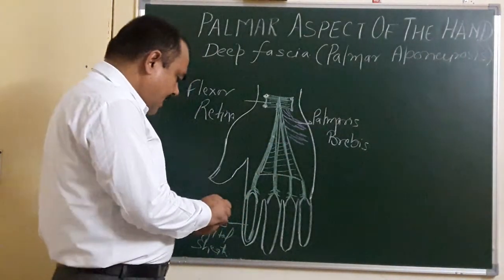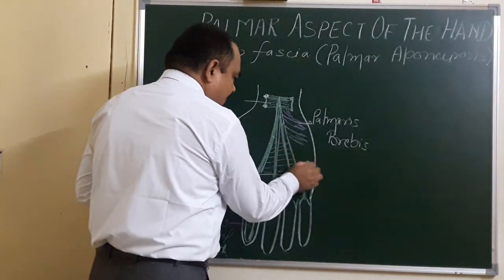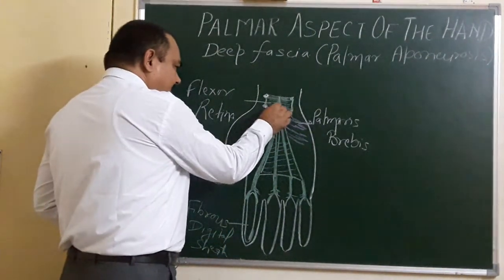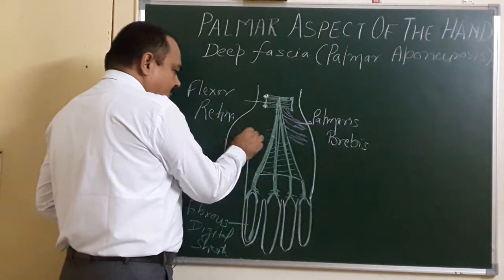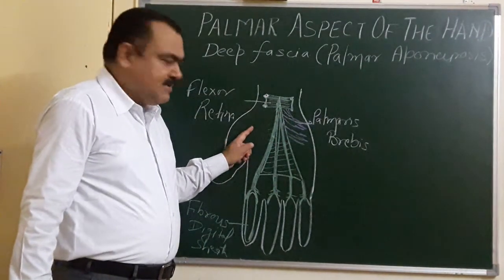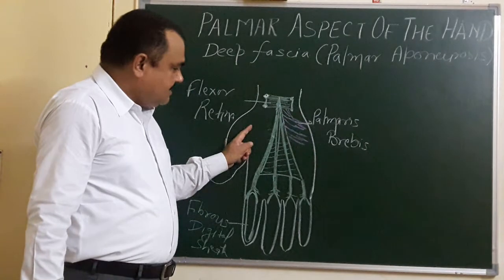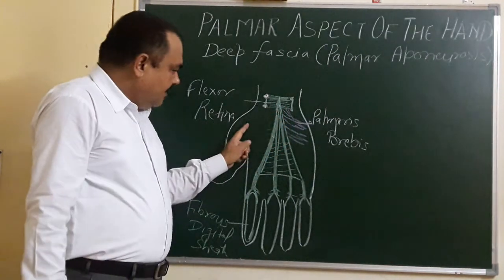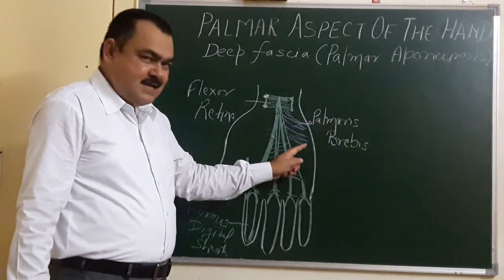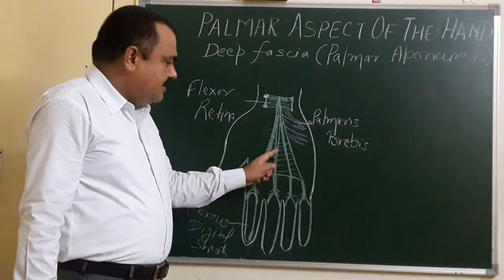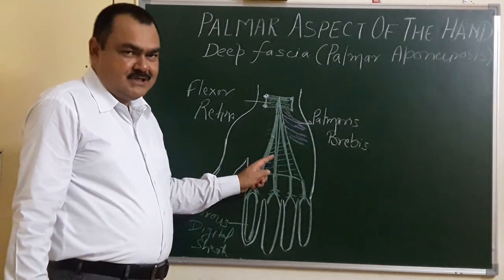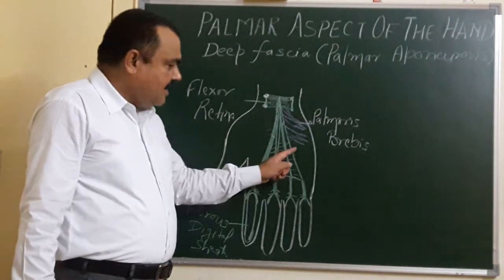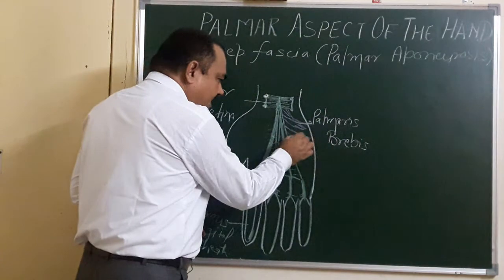This muscle also takes origin from the flexor retinaculum and from the medial border of the palmar aponeurosis. It also gives an extension which covers the hypothenar muscle. Laterally, it attaches with fascia covering the thenar muscle. The fascia covering the thenar muscle is thin, and the fascia covering the hypothenar muscle is also thin. Centrally, this deep fascia is thick, forming the palmar aponeurosis. Laterally it merges with thin fascia covering the thenar muscle, and medially it merges with fascia covering the hypothenar muscle.